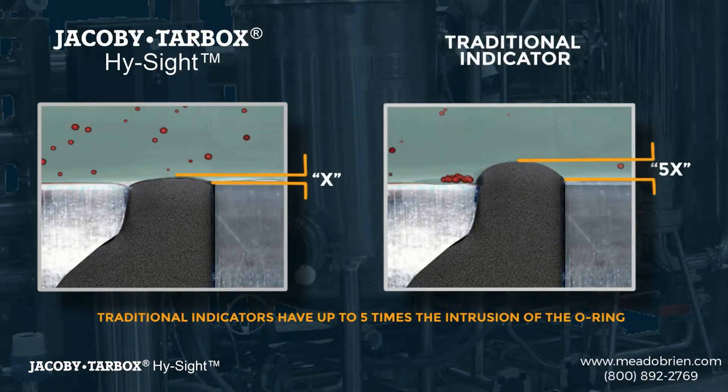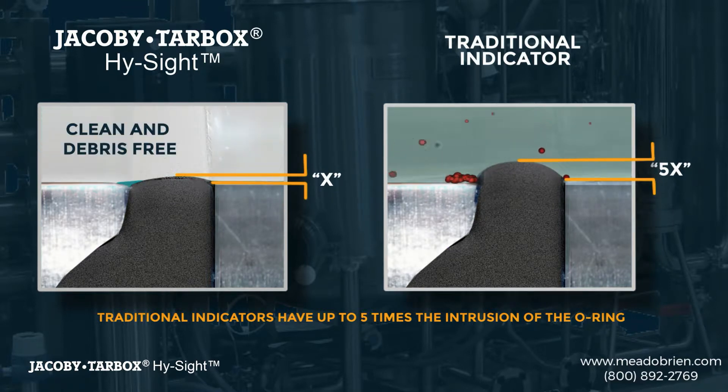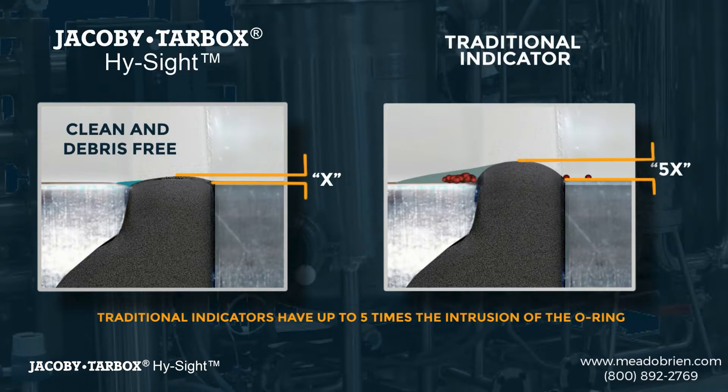Traditional units have up to five times the o-ring intrusion of the High Site, drastically increasing cleaning time, the chances of trapping material, and the potential for contamination.